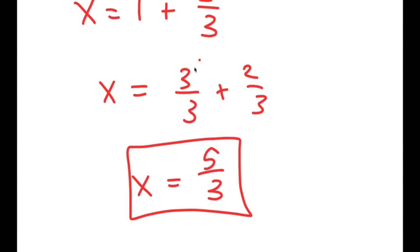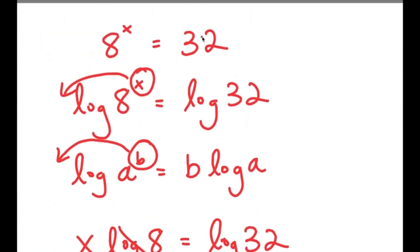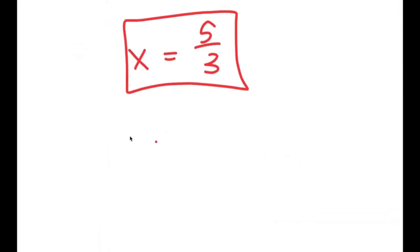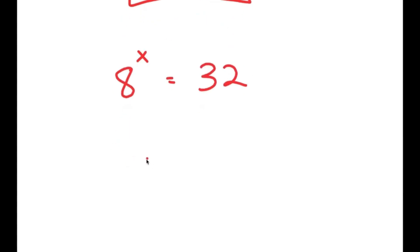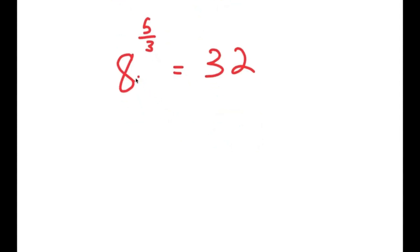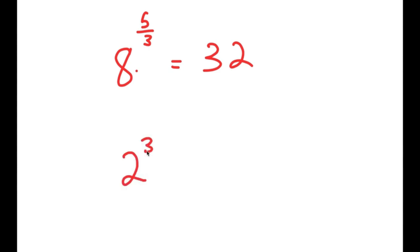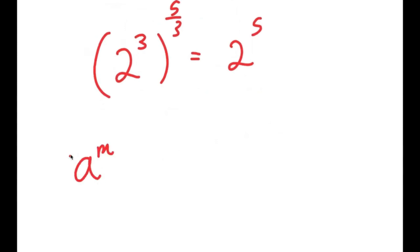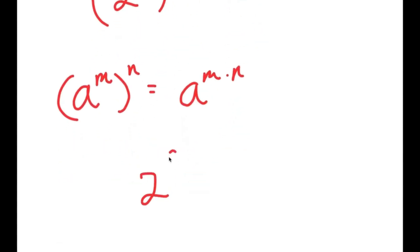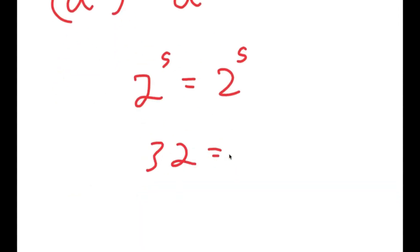Now, how do we know that this is the right answer? Going back, we have 8 to the power of x equals 32, and we're plugging in 5 over 3. So we get 8 to the power of 5 over 3 is equal to 32. Since 8 is the same thing as 2 to the power of 3, I get 2 to the power of 3 to the power of 5 over 3 is equal to 2 to the power of 5. Using the rule a^m^n = a^(mn), the 3s cancel out, and I get 2 to the power of 5 is equal to 2 to the power of 5, or 32 equals 32. This is correct.